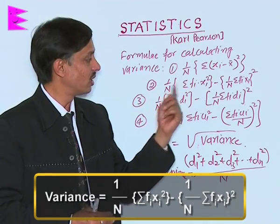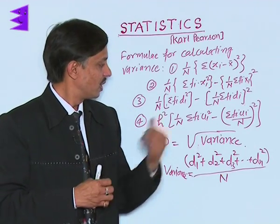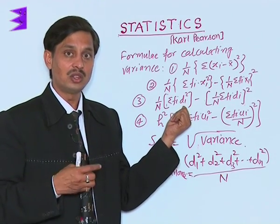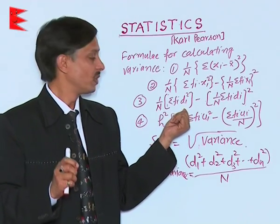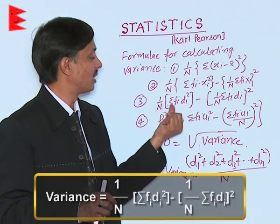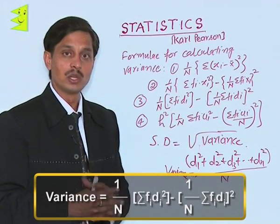The second result uses the shortcut method. As in class 10, with deviation dᵢ = xᵢ - assumed mean, the formula is: (1/n)Σfᵢdᵢ² - [(1/n)Σfᵢdᵢ]².